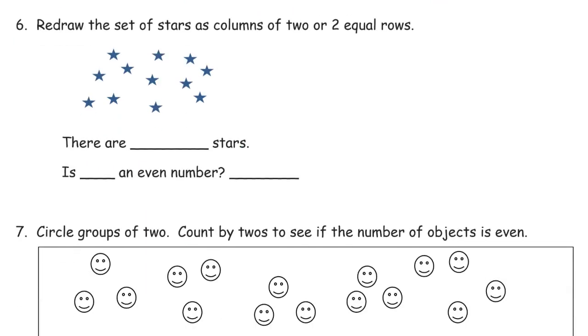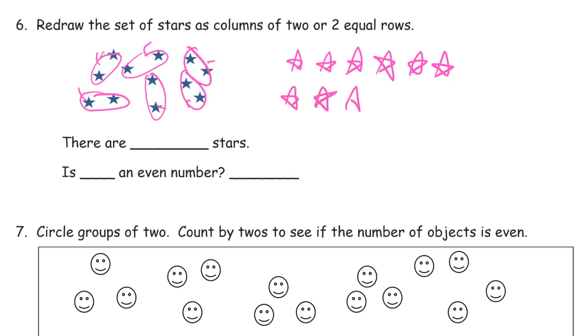Redraw the set of stars as columns of two or two equal rows. Columns of two or two equal rows. So, let's see how many. We need to know how many rows to have or how many pairs we have, right? So first, what I'm going to do is I'm just going to circle these in pairs. And then count the pairs and that way I'll know how many I can have in each row. So, one, two, three, four, five, six. So, if I have one, two, three, four, five, six. One, two, three, four, five, six.